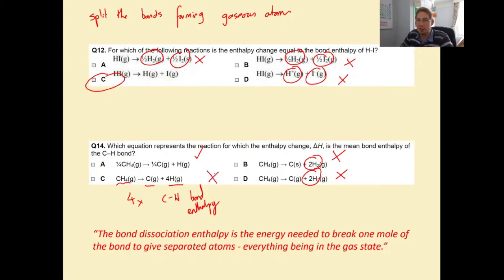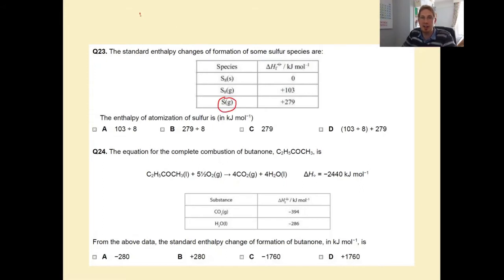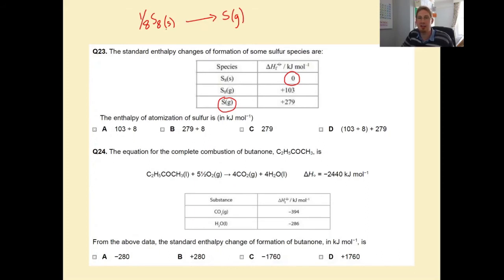Which equation represents the reaction for which the enthalpy change is the mean bond enthalpy of the C-H bond? We have a quarter CH₄ going to a quarter carbon and hydrogen - that looks good - but splitting methane into carbon and four hydrogen atoms is four times the C-H bond enthalpy. For the standard enthalpy of atomization of sulfur - atomization is forming gaseous atoms, so one eighth of S₈ solid going to sulfur gas. Since S₈ solid has no enthalpy of formation, the answer is simply C: 279 kJ/mol.